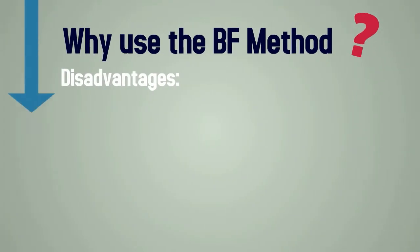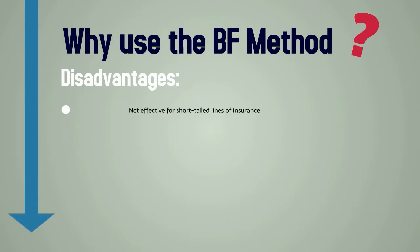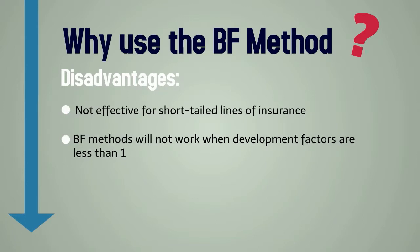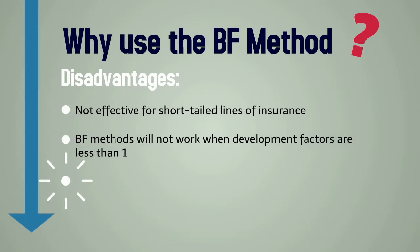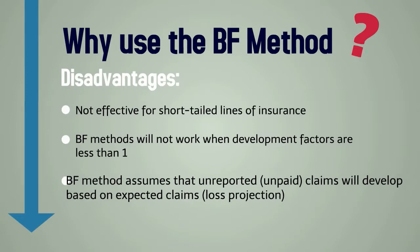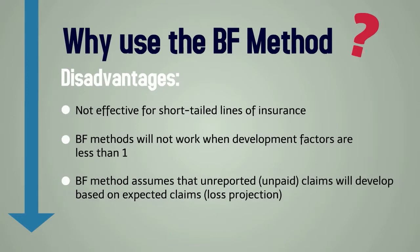However, there are some disadvantages to the Bornhuter-Ferguson Method. It's not effective for short-tailed lines of insurance. The method will not work when development factors are less than one. And the method assumes the unreported or unpaid claims will develop based on expected claims.